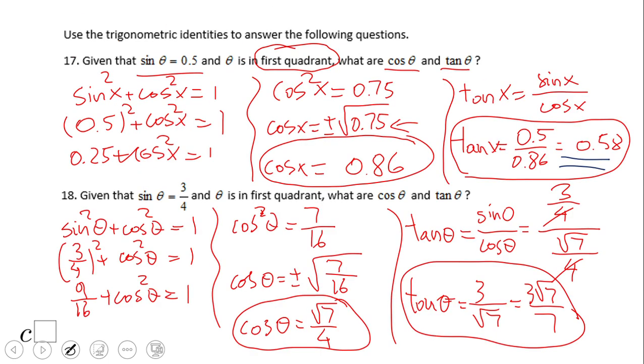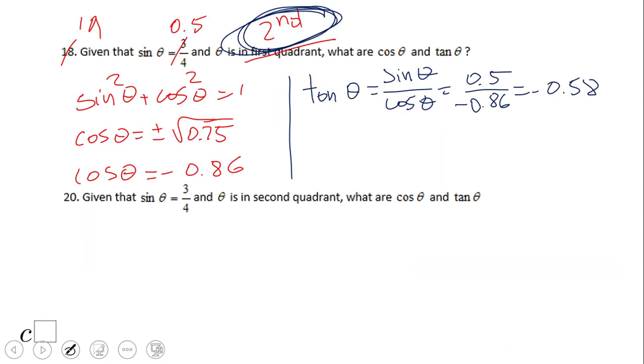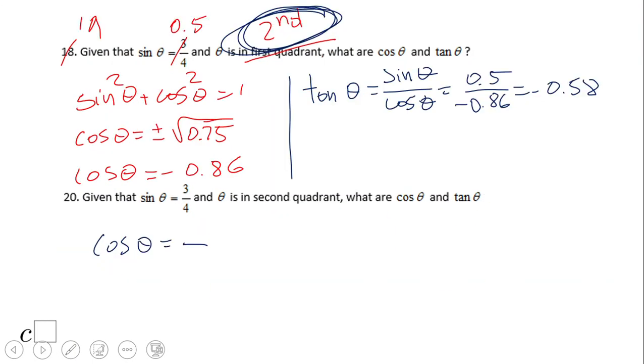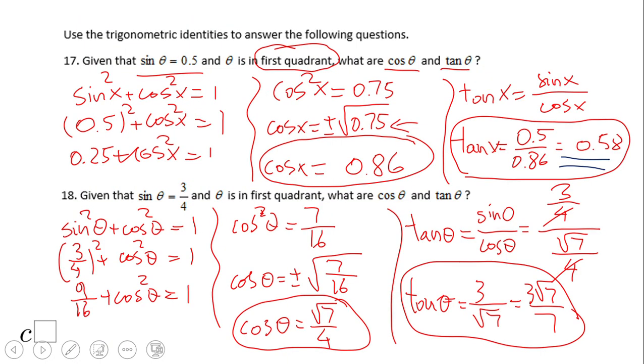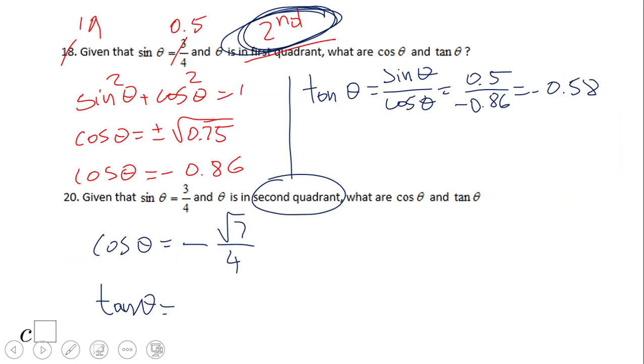The same story for number 20. We're going to end up with cosine of that angle being negative, negative square root of 7 over 4, right? Because it is in second quadrant. And the same thing for tangent now. Tangent will be negative. It is in second quadrant. Now it's going to be negative.